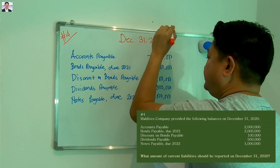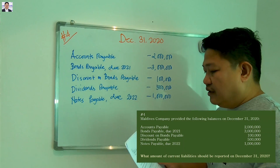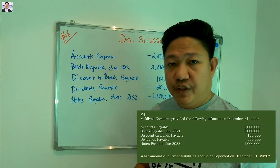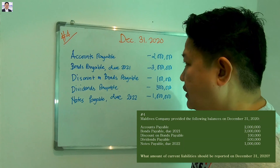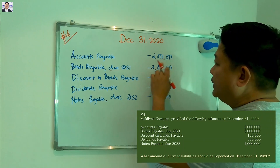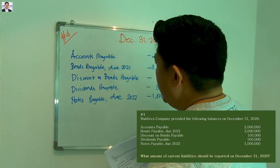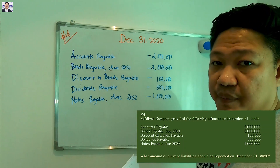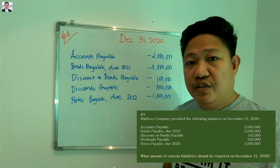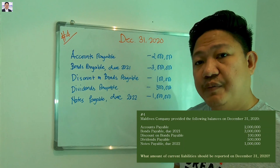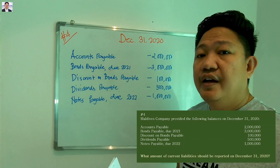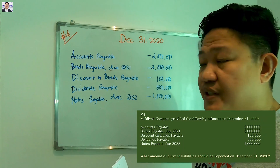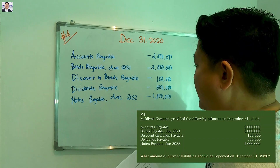The company provided the following balances on December 31, 2020. Accounts payable of 2 million — accounts payable is considered a current liability because it is a short-term obligation from your suppliers for the purchase of goods and services. So we will consider this as a current liability.